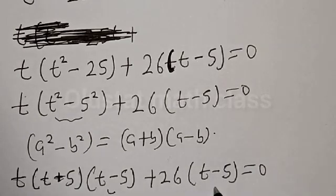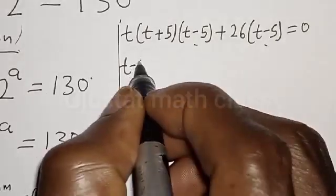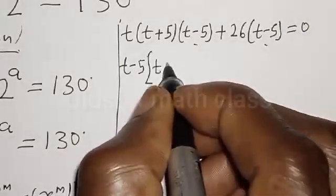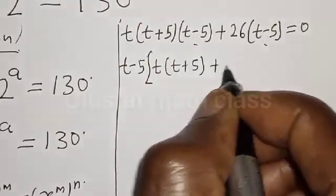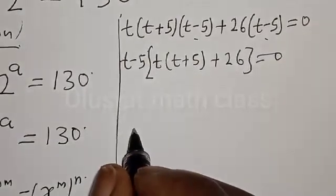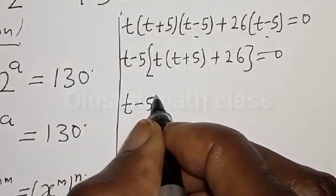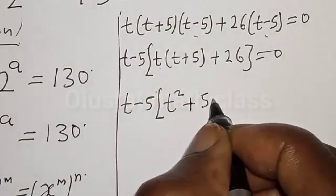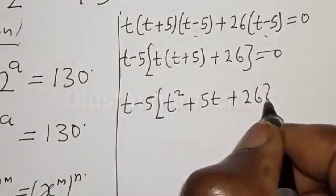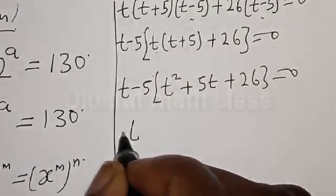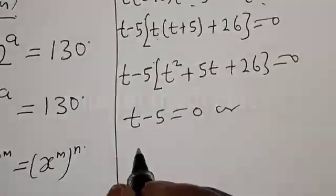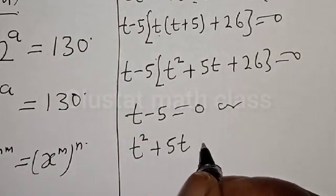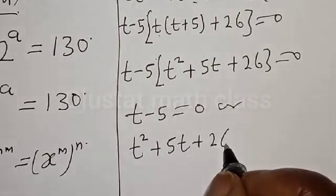Now here we have t minus 5 in both terms, so we factor it out. We get t minus 5 into t times t plus 5 plus 26 equal to zero, giving t minus 5 into t squared plus 5t plus 26 equal to zero. So either t minus 5 equals zero, or t squared plus 5t plus 26 equals zero.